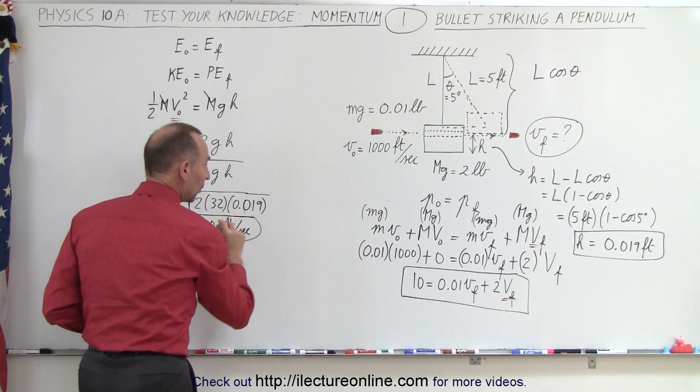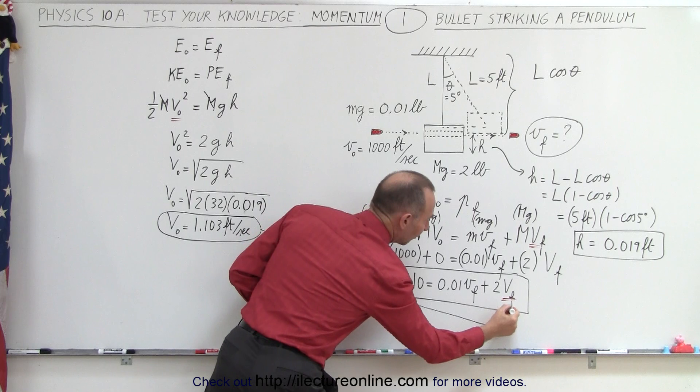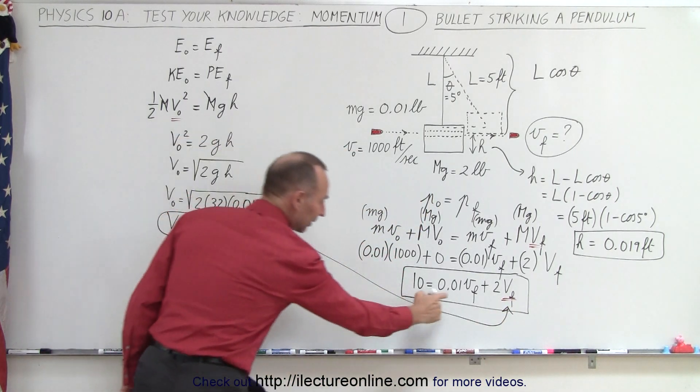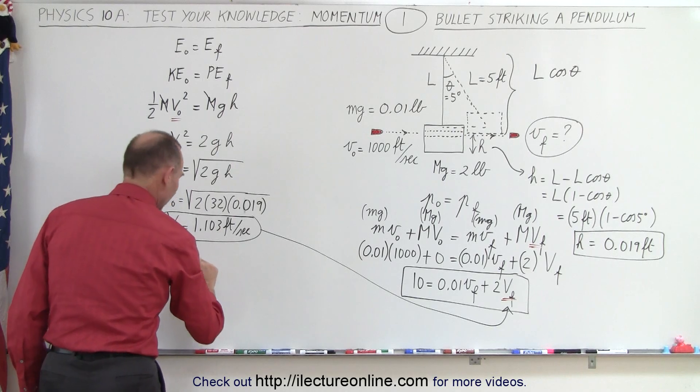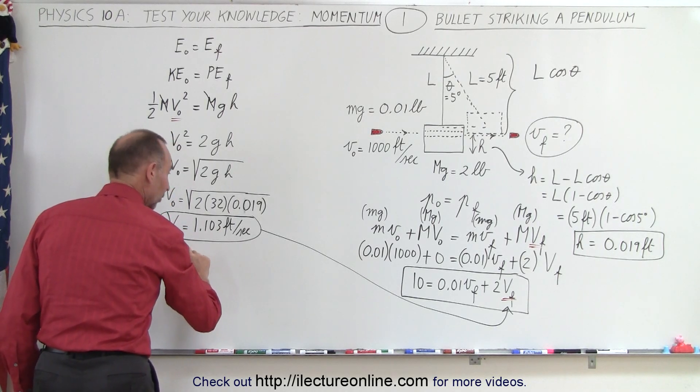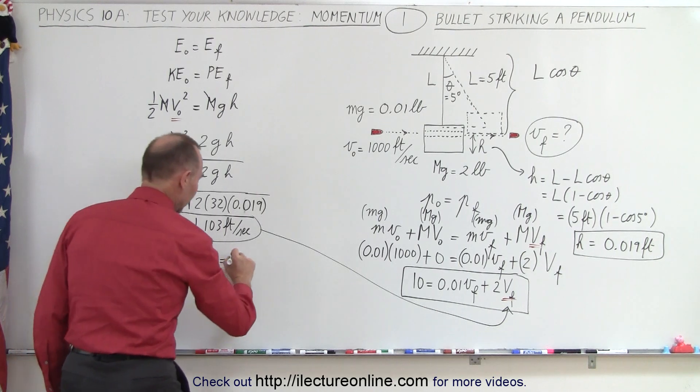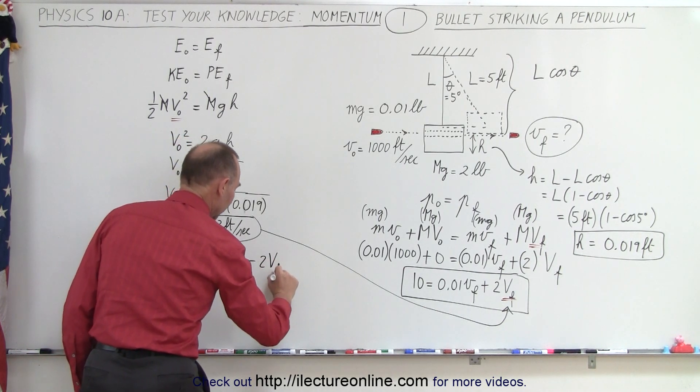Now we're going to plug that into our V final there. If we solve for V final of the bullet, we can say that 0.01 V final equals 10 minus 2 V final of the block.